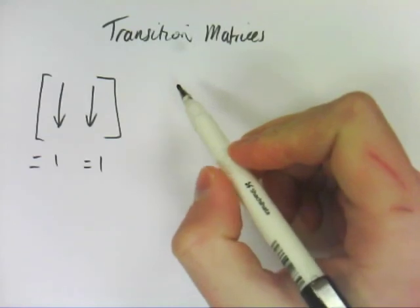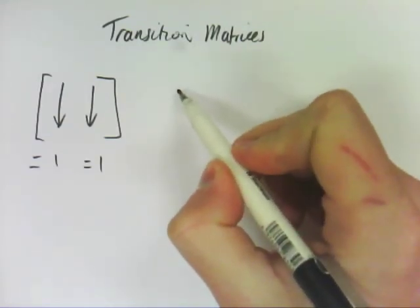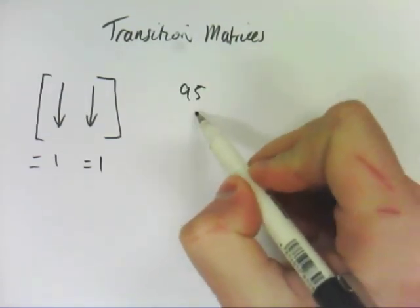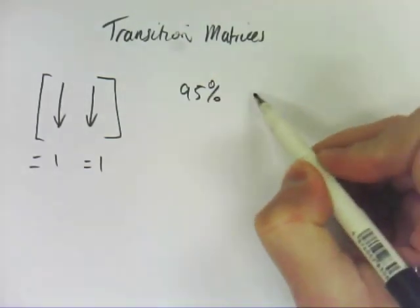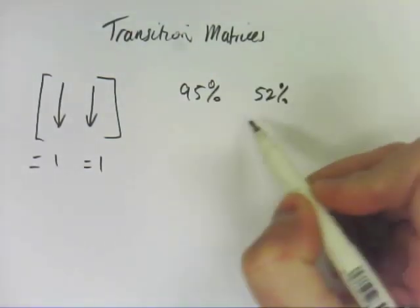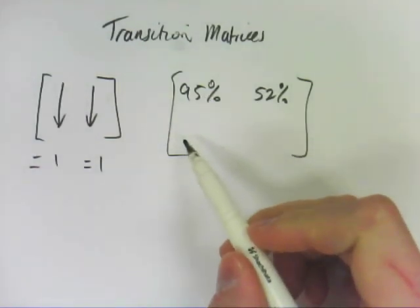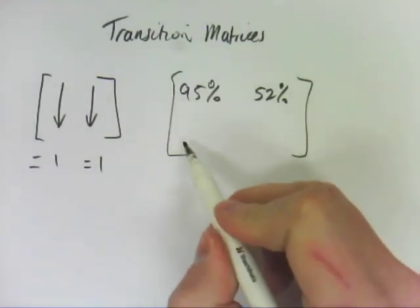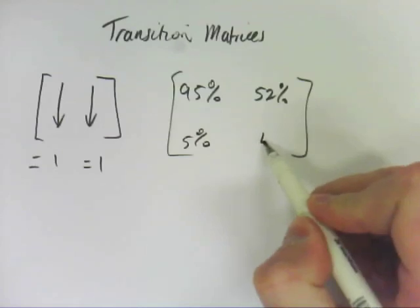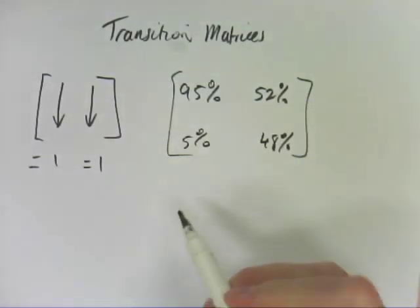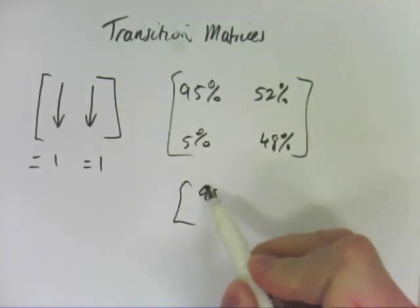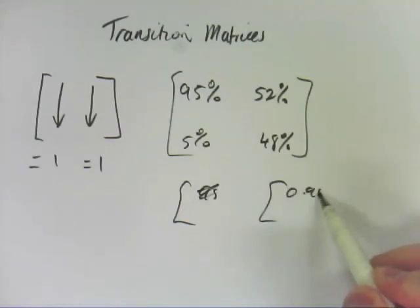These are always, for proper transition matrices, as a decimal. So if that was 95%, and that was 52%, you could work out the bottom two of these and then convert it into a transition matrix. For example, this one would be 5%, and this one would be 48%, and that as a transition matrix is 0.95, 0.05, 0.52, and 0.48.